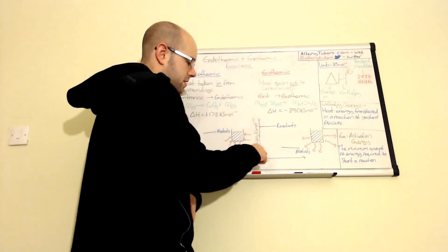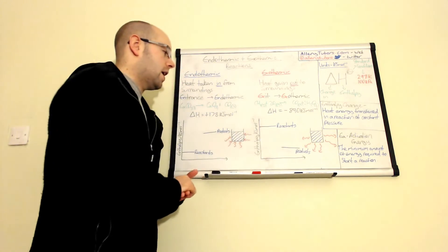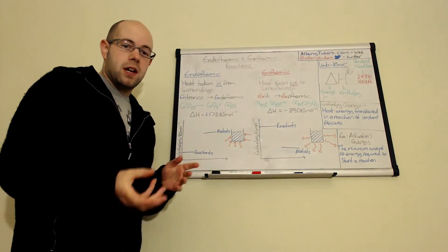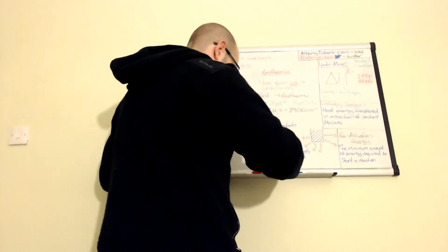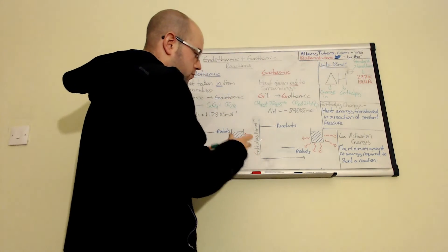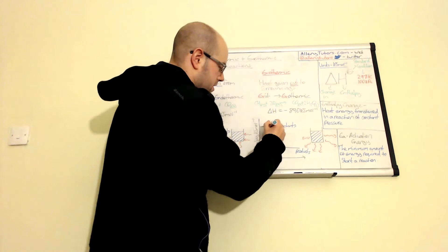Basically, what this means is that our enthalpy of reactants, which is the amount of energy that we need to actually put in to our reactants, is higher than our products. And what that means is that if we draw a line on here, just to show what's happening.